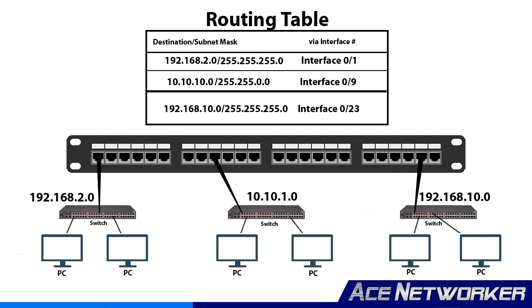One more side note: layer 3 switches can route traffic between networks very similarly to a router, but they also perform switching functions by looking at source and destination MAC addresses like any other layer 2 switch. Typically, a layer 3 switch is not a full replacement for a router at the enterprise level, but it can be used internally for different network segments within an organization — especially where there is slower or less traffic being routed between internal sub-networks. That's the rundown on what a router does, how it's used, and why we need them.